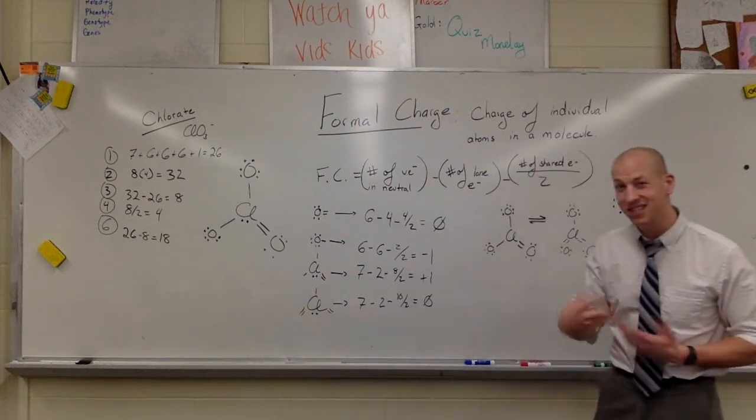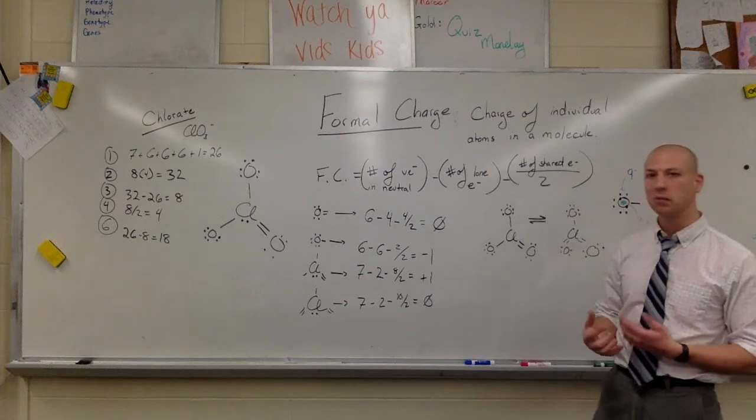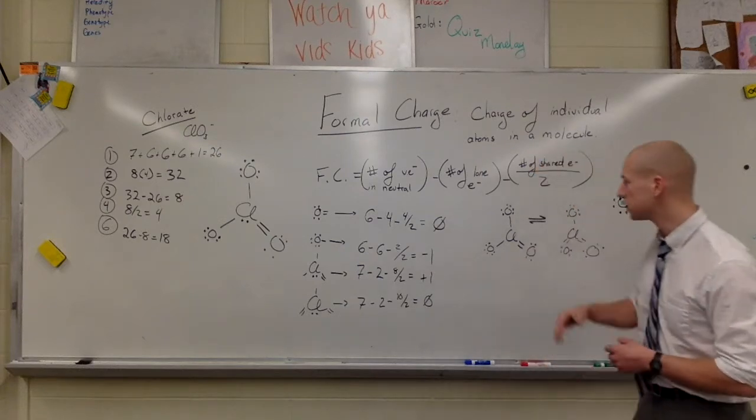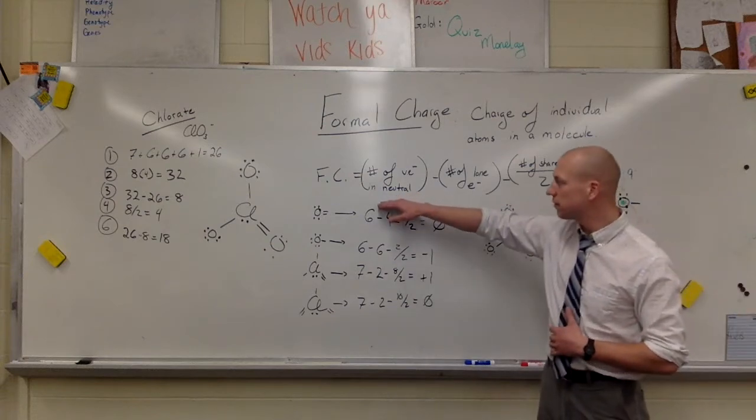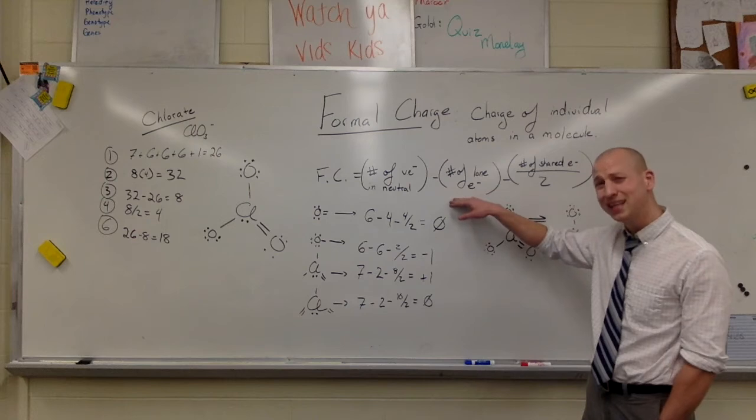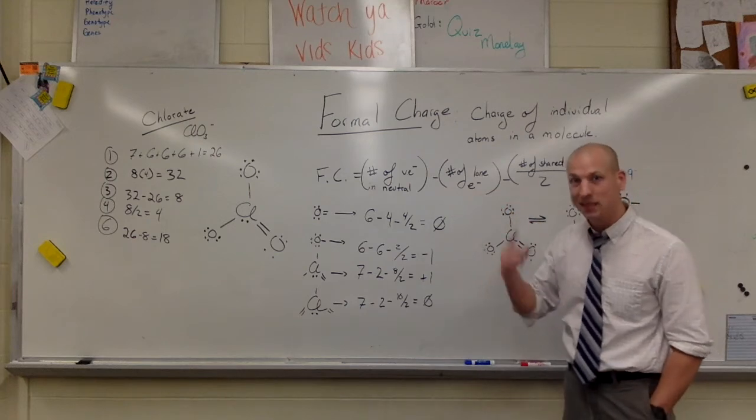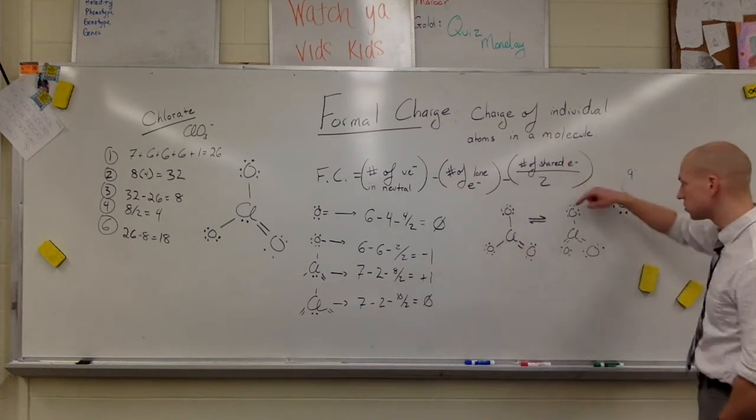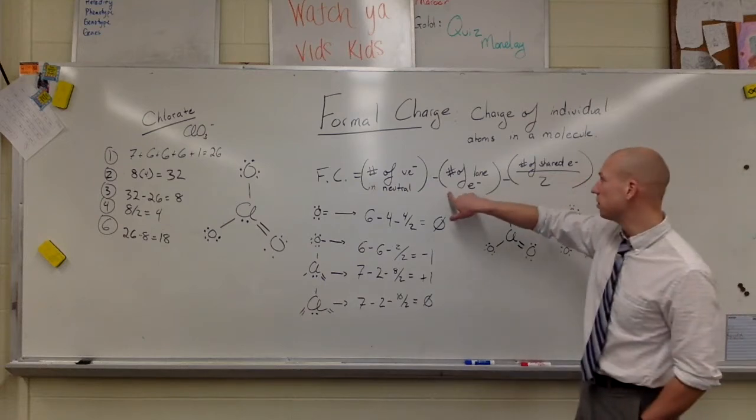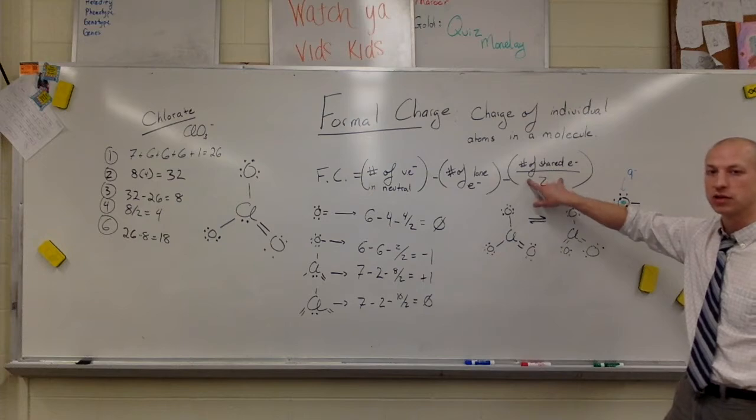We take the number of valence electrons in the neutral atom. So for oxygen, that would be six. For chlorine, that's seven. For carbon, it's only four valence electrons. So we take the number of valence electrons in the neutral molecule. We then take the number of lone electrons, not lone pair, but each individual lone electron. So this would be one, two, three, four, five, six.